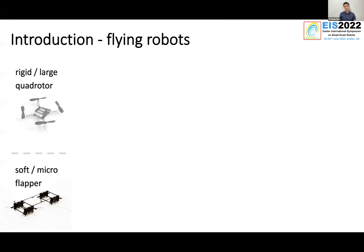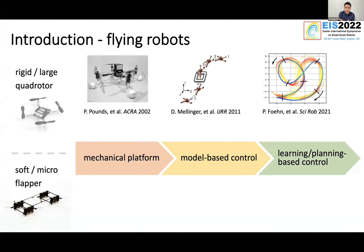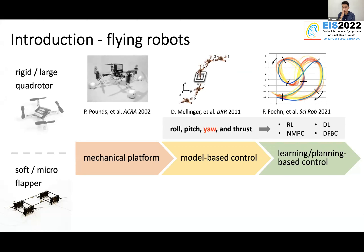I will try to split the research progress of the past couple of decades into three stages. The first is the mechanical design of the robotic platform, because you need a reliable platform to perform any task. Once you have a good platform, you can move on to model-based control and more advanced control algorithms. For the quadrotor, people started developing that around the early 2000s and achieved more reliable mechanical design, and around the 2010s people developed really good model-based control. In more recent years, we see learning-based or optimization-based control appearing in top journals.